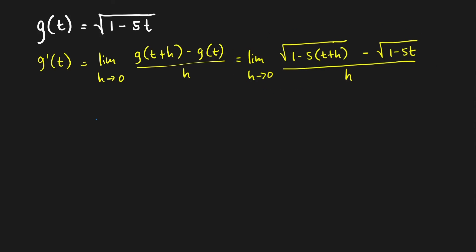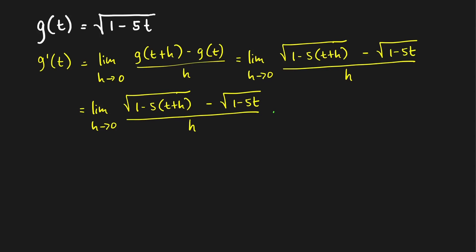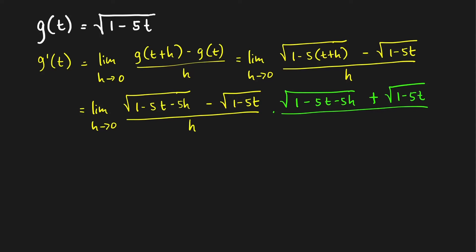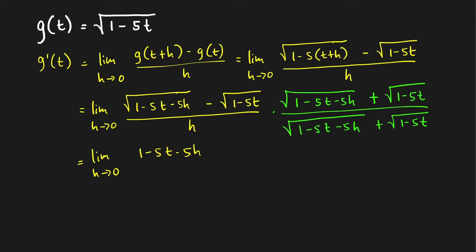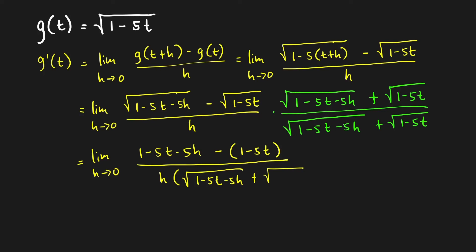Let's multiply by its conjugate. The conjugate is the sum: square root of 1 minus 5t minus 5h, plus square root of 1 minus 5t — we use plus because we want to eliminate the radicals in the numerator. So we multiply over: square root of 1 minus 5t minus 5h plus square root of 1 minus 5t. In the numerator we get the difference of two squares: 1 minus 5t minus 5h minus (1 minus 5t). Don't forget the grouping symbol. All over h times the sum of the square roots.